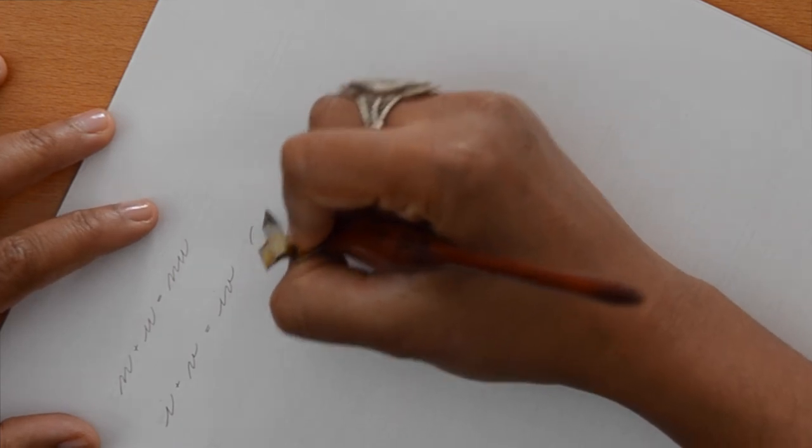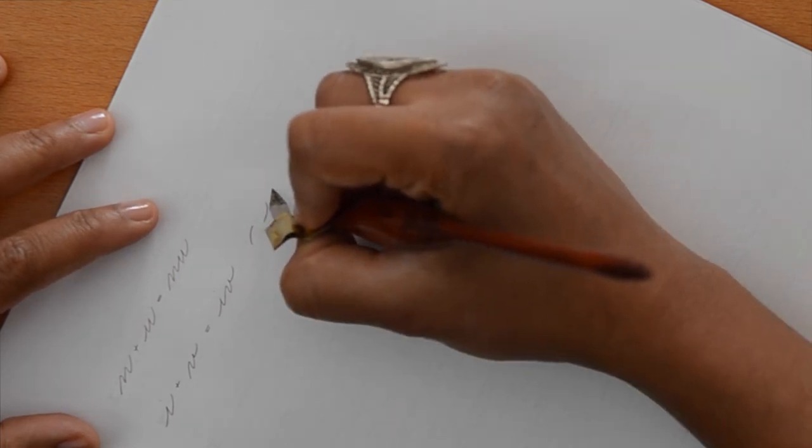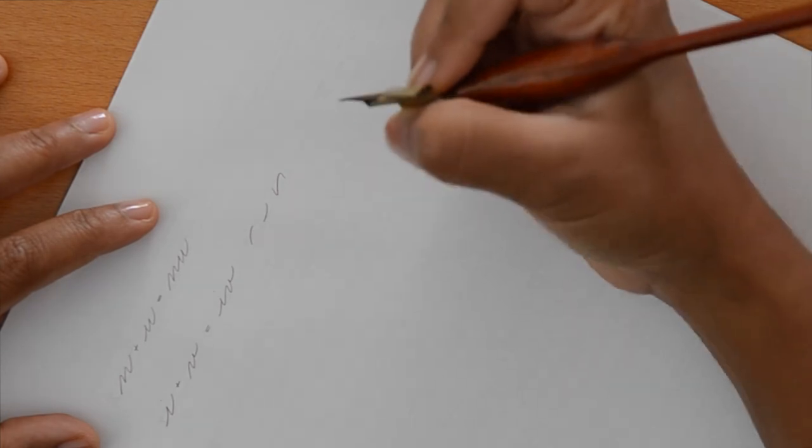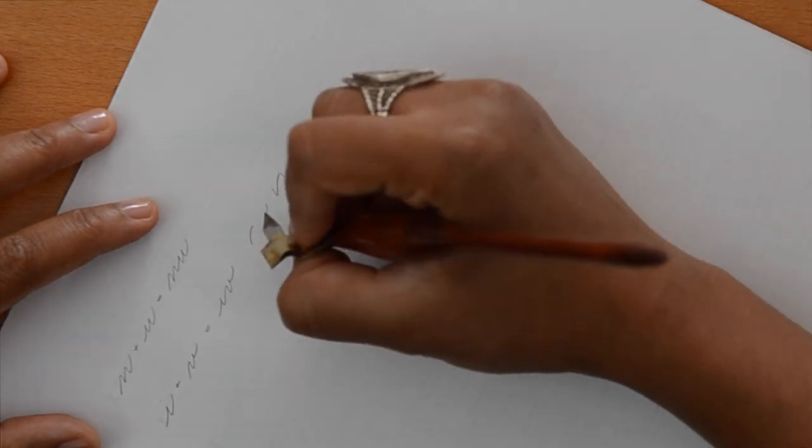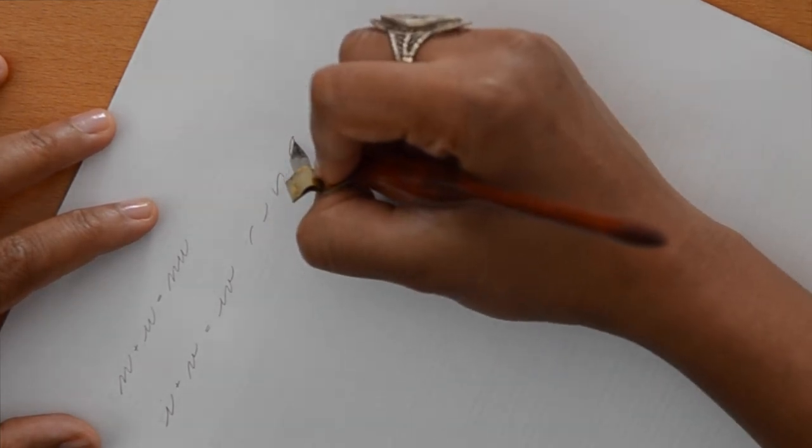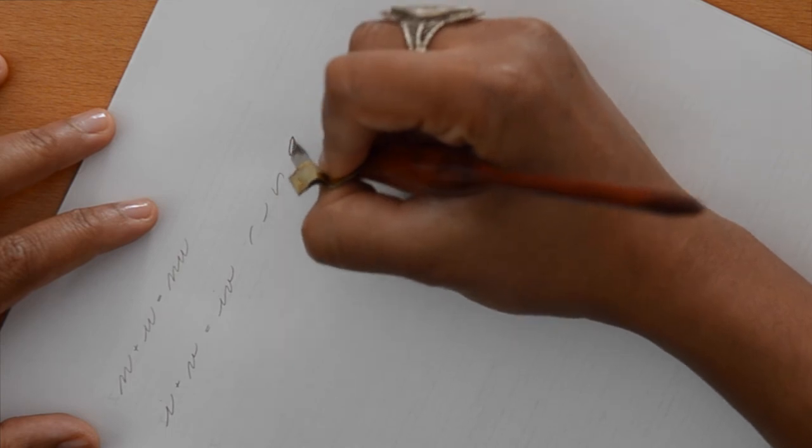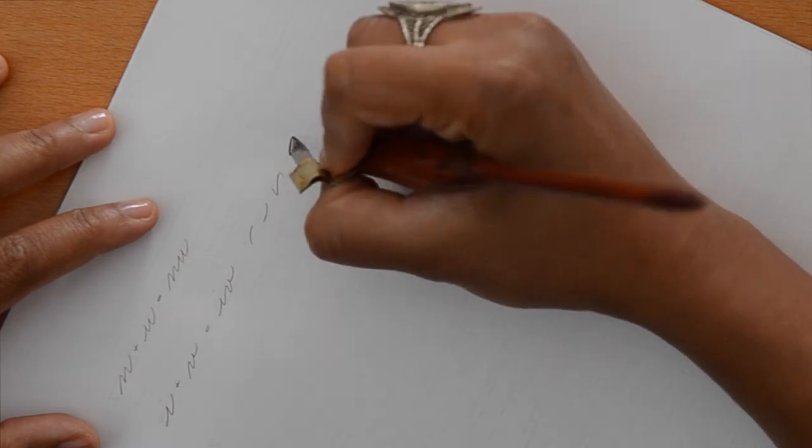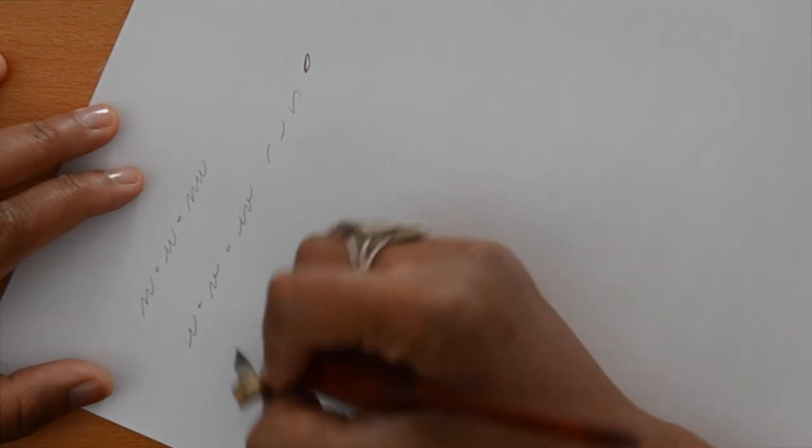So if you imagine like an oval, the reason that we call them right curves and left curves is because the right curve makes the kind of right part of the oval and the left curve makes the left part of the oval. And a compound curve transitions between the two.